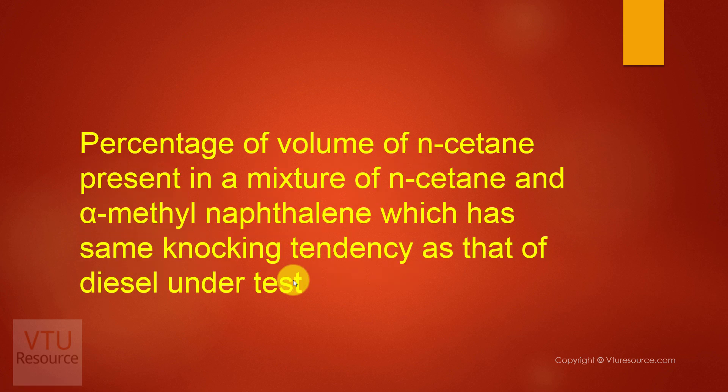The percentage by volume of N-Cetane present in a mixture of N-Cetane and Alpha-Methyl-Naphthalene, which has the same knocking tendency as that of the diesel under test, is known as the cetane number. N-Cetane is a straight chain hydrocarbon.